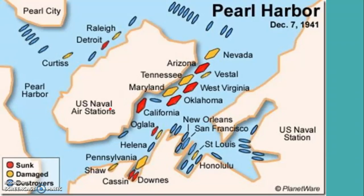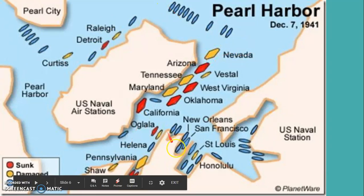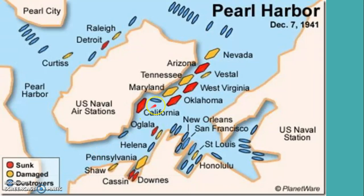Here is the organization of Pearl Harbor. We have multiple lines of ships — one line, another line, a third, fourth, fifth — a lot of direct lines of ships. If an airplane came from one side following the lines, they could hit these ships easily, and another coming from another side could get those ships. It was basically organized in a manner that made it easier for the Japanese airplanes to attack.